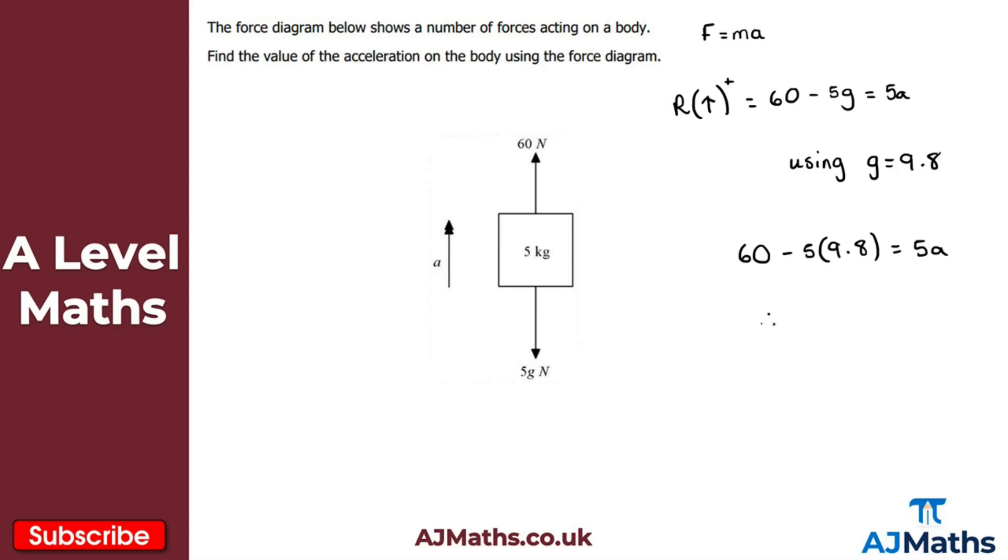So therefore what we can see here is 5a is equal to 11 and if I want a here I just need to divide both sides by 5. So a is equal to 11 divided by 5 and 11 divided by 5 will give me 2.2 there. That's 2.2 and because we're talking about acceleration here that's meters per second per second.